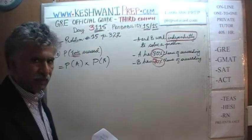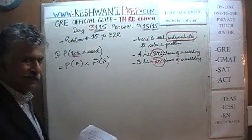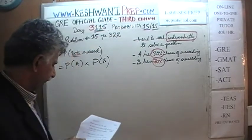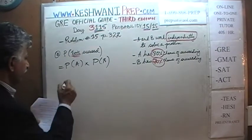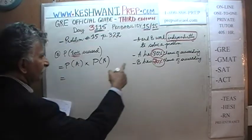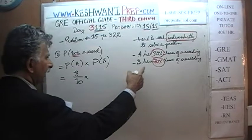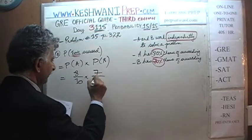If events A and B are independent, then the odds that both A and B will happen is simply the probability of A times the probability of B. The odds that A will succeed is 80%, which is 8 out of 10. The odds that B will succeed is 70%, which is 7 out of 10.